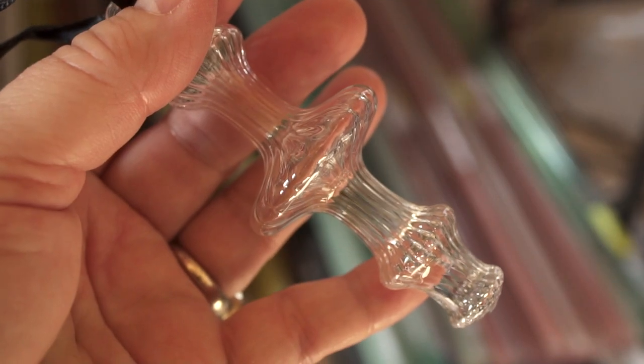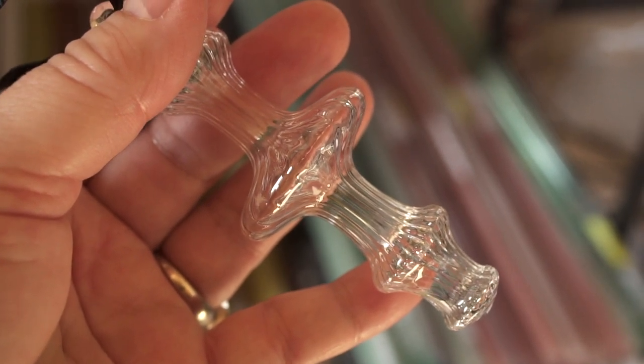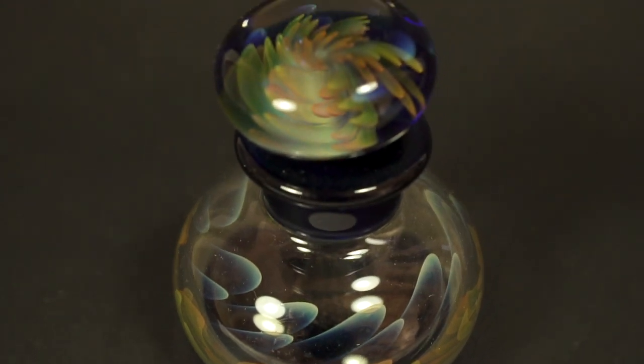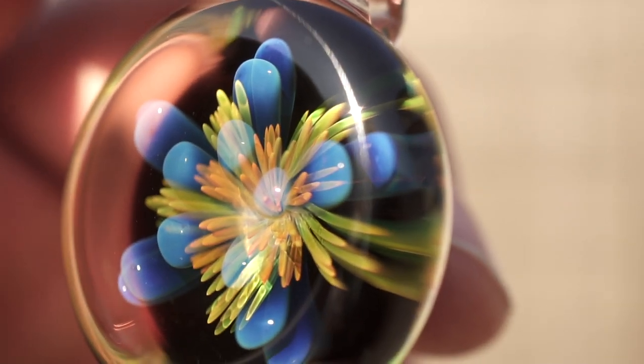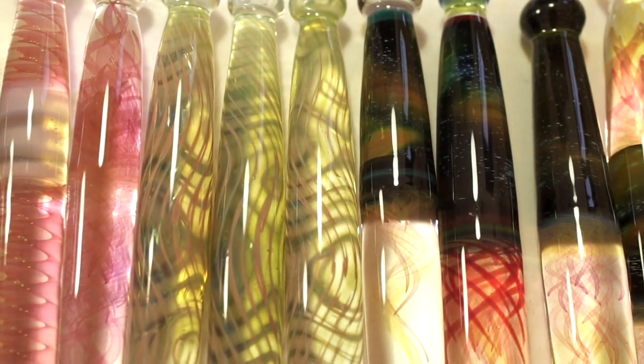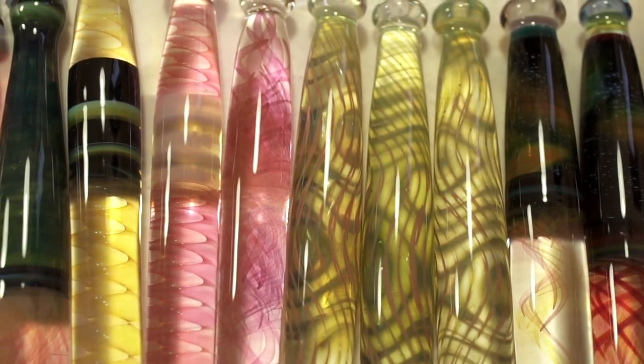Also in his studio are other objects that he makes, like here's a Christmas ornament. Here's a small glass bottle with a beautiful lid and a pendant.